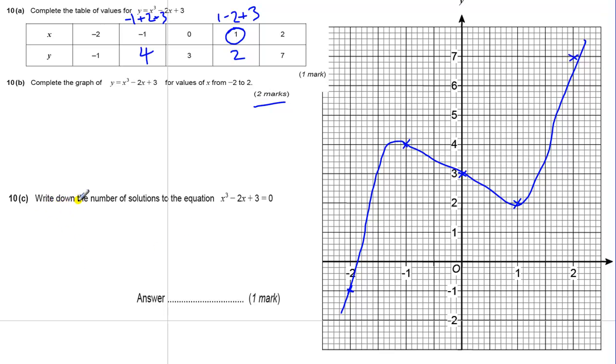Now, a gift of a mark here. Write down the number of solutions to the equation x cubed minus 2x plus 3 equals 0. I've got a feeling when I marked this question, I actually was looking for the solution to the equation, and I marked it incorrectly. If I was looking for the solution for the equation, I'd be looking to where this equals 0, which is just here, just below 2. But if I'm looking for the number of solutions, okay, there is actually just the 1.